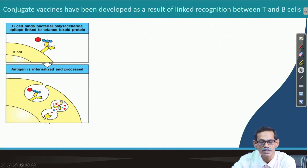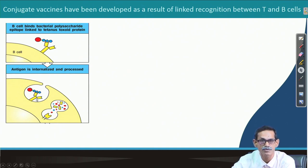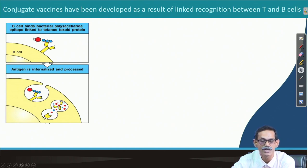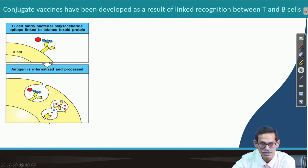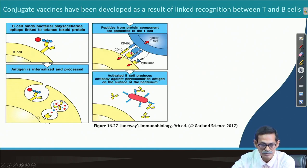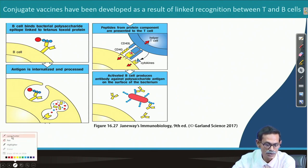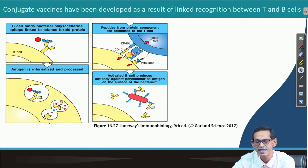The B cell receptor can recognize and bind the polysaccharide, and after binding it will internalize that part and it will be degraded. But in this degradation, carbohydrate is not going to fit for MHC presentation — only the red part will fit, which is the conjugated part: the tetanus toxoid. Tetanus toxoid has nothing to do with this pathogen directly, but we can have double protection. The tetanus toxoid fused with that particular carbohydrate is taken up by the B cell, processed, and presented by MHC class II.